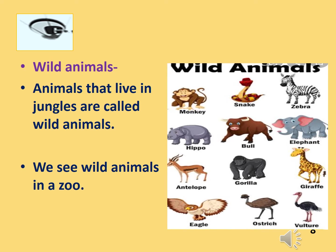Here is wild animals. Animals that live in jungles are called wild animals, but we can see wild animals in a zoo also. Here are a few examples of wild animals like monkey, snake, zebra, hippo, bull, elephant, antelope, gorilla, giraffe, eagle, ostrich and vulture. Do you know what are national parks? National parks are some areas in forests that are restricted by the government, and animals live safely there.